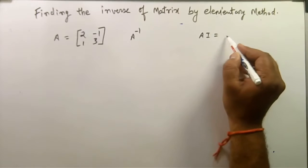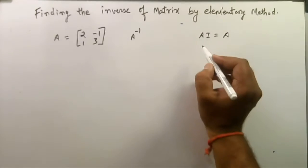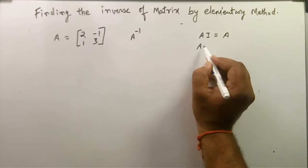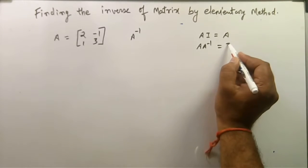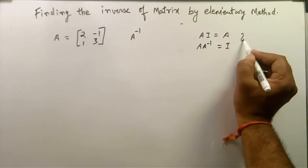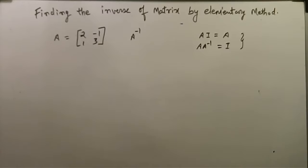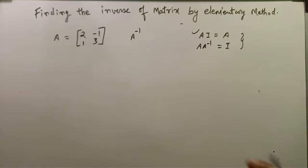We multiply A into A inverse which will be equal to the identity matrix. We use the matrix, so we start with this and we will get the result.